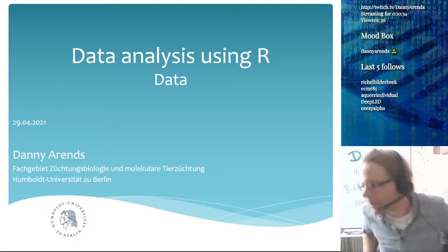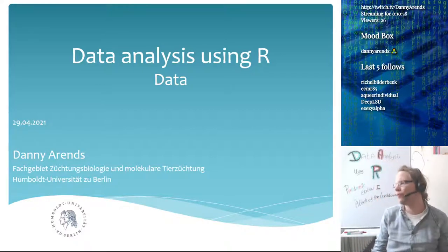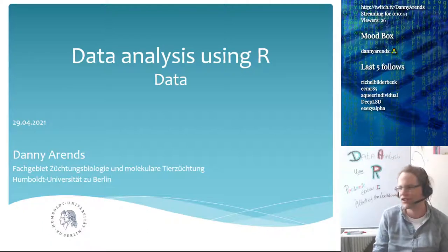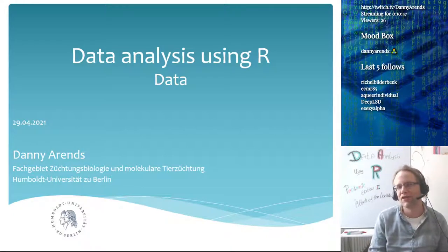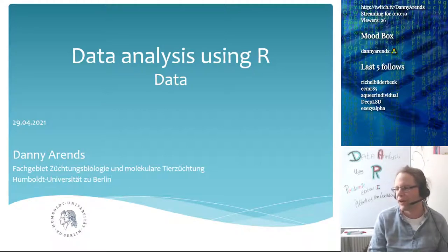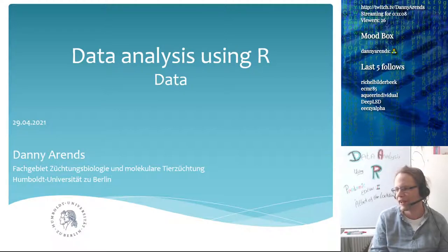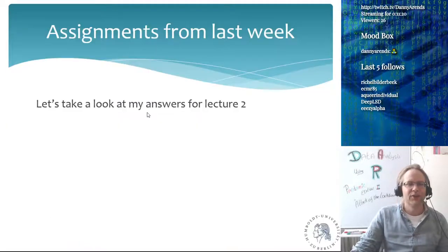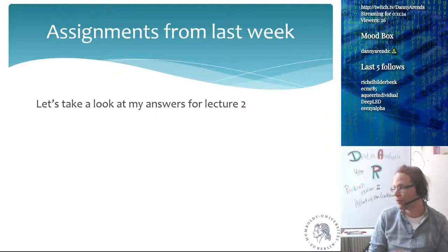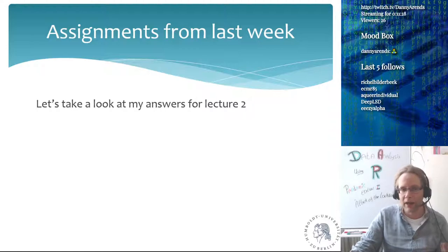We have 26 viewers at the moment, so if everyone can say hi in chat, then I have 20 people talking at once, which is one of the Twitch achievements I still need to get. If I get that achievement, I think I get 15 more things. You can see that some people have a diamond in front of their name, and Anna has a little sword. If everyone just says hi, then we have 20 people chatting at once and that should be enough to get me a couple more diamonds. Anyway, for today, first things first — let's look at my answers for Lecture 2.